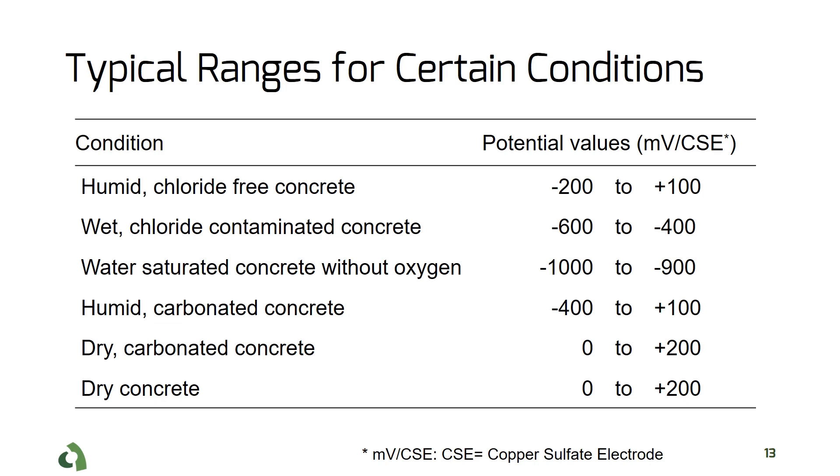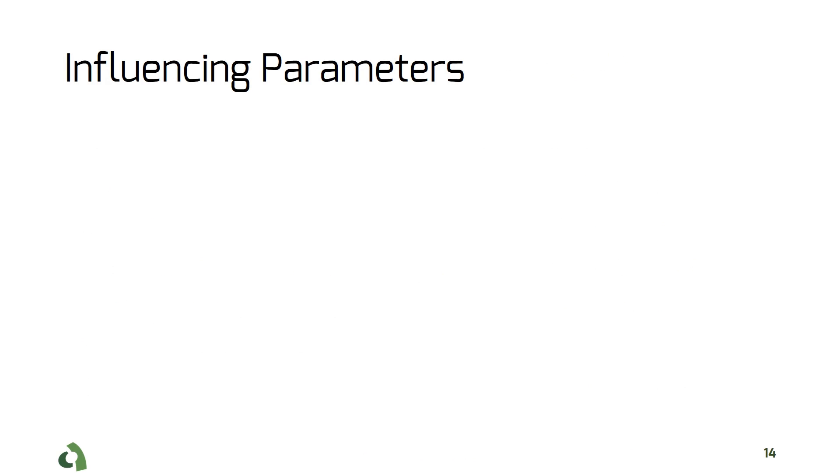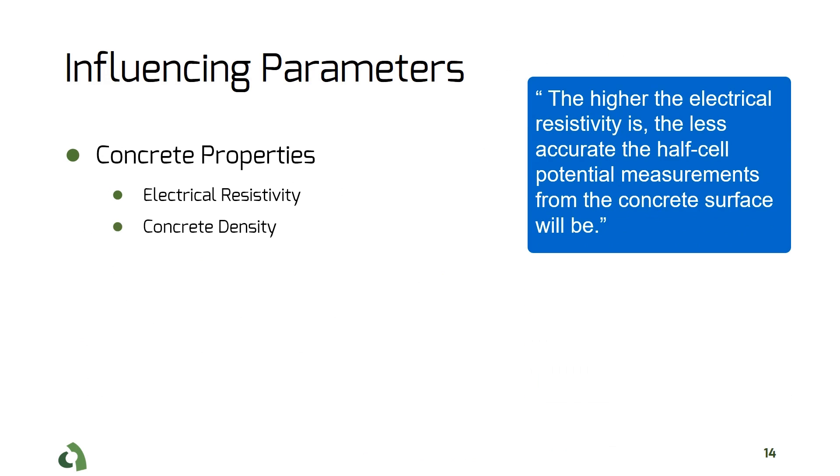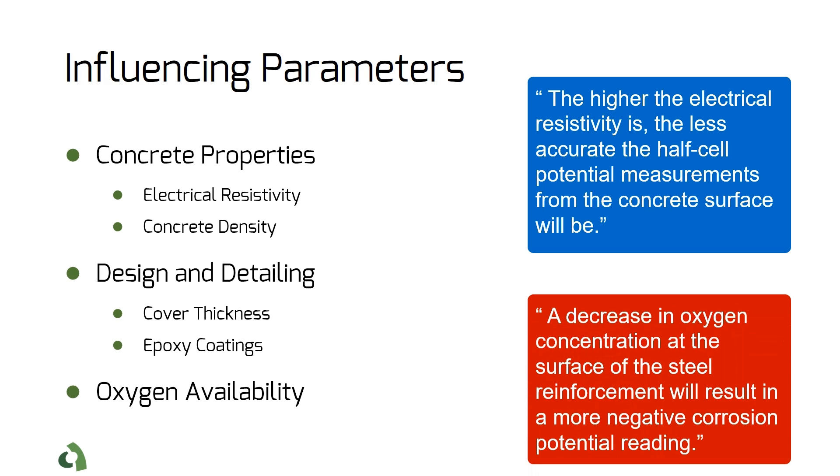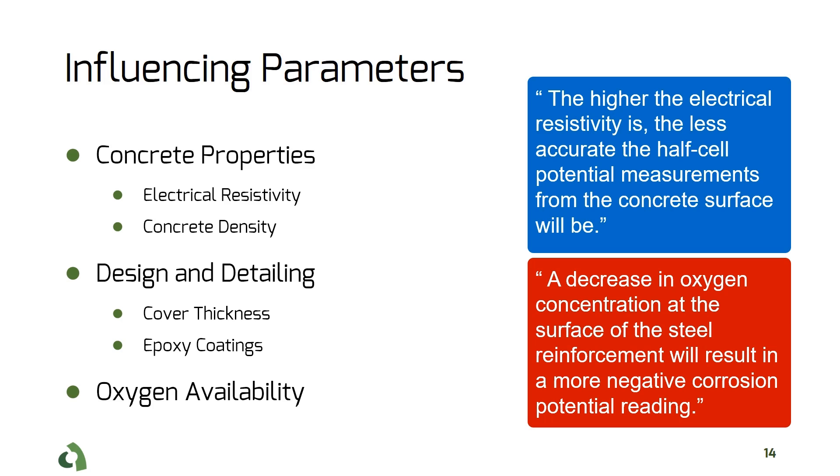When it comes to half-cell potential values, one should take into account the effect of environmental conditions, such as moisture and humidity, as well as the properties of concrete materials. For example, dense concrete versus porous concrete versus carbonated concrete.